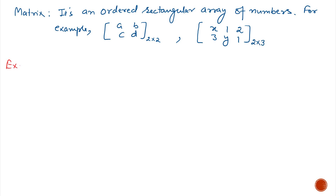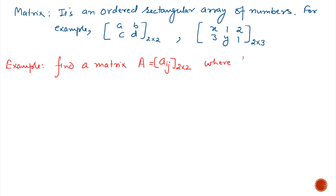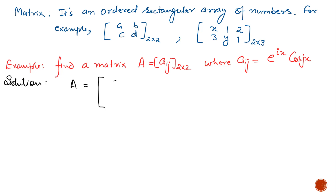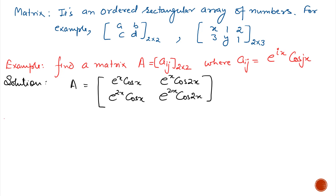We can understand the formation of a matrix with the help of an example. Example 1: find a matrix A of order 2×2 with element denoted by aij, where aij = e^(ix) · cos(jx). A matrix of order 2×2 has 4 elements. The first element is a11 — replace i and j by 1 and 1. Next element is a12 — replace i and j by 1 and 2. Next element is a21 — replace i and j by 2 and 1. And the last element is a22 — replace i and j by 2 and 2 respectively.